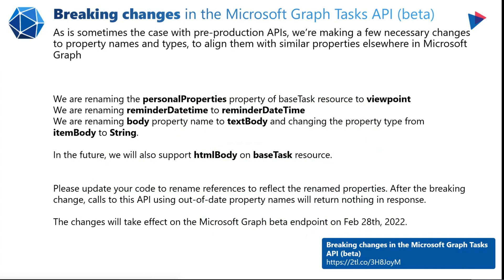Recently, there was a breaking change announced to the Microsoft Graph Tasks API that was in beta — the Microsoft Graph beta endpoint. These changes took effect February 28th, 2022. Changes include: renaming the personal properties property of base task resource to 'viewpoint'; renaming reminder date time to 'reminderDateTime' with a capital T; renaming body property name to 'textBody' and changing the property type from item body to string. In the future, there will also be support for HTML body on base task resource. Make sure you update your code to reflect these renamed properties.